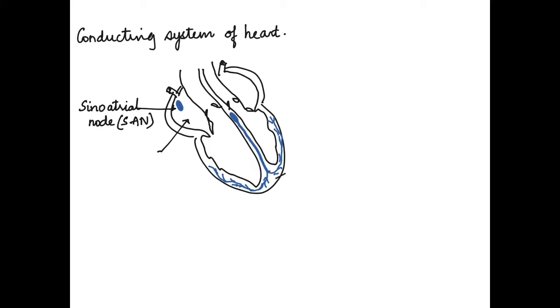The SAN is located on the right upper corner of the right auricle. The impulses generated then pass along these auricles, making the auricles contract to push blood into the ventricles. As this happens, it passes the impulses to the atrioventricular node or the AVN.